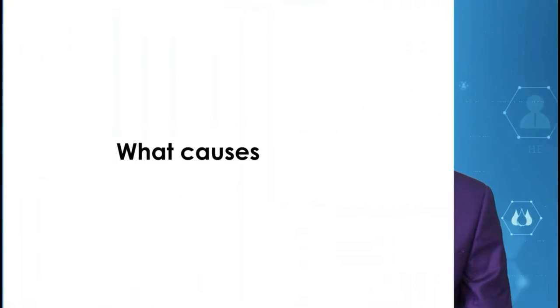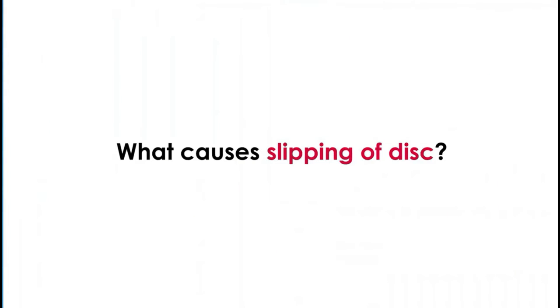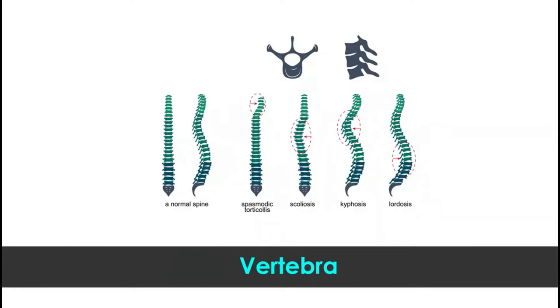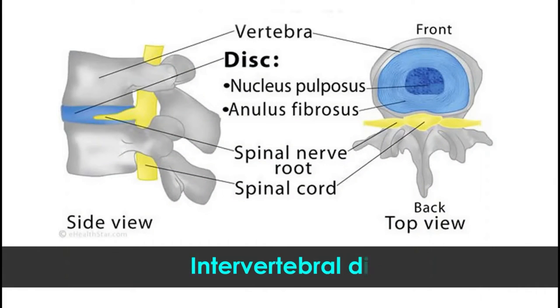What causes slipping of the disc? Our vertebral column is made up of a number of small bones known as vertebrae. In between each two bones, there is a soft cushion-like material known as an intervertebral disc. This disc acts as a cushion, and this cushioning is important. If our vertebral column were made up of a single bone, we would be very stiff and unable to bend forward or back.